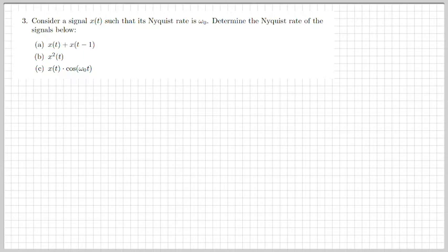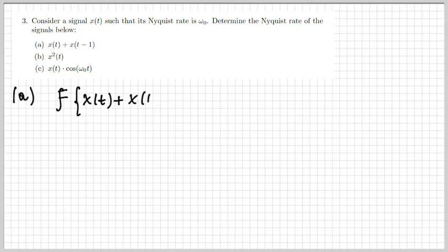For today, here's the first exercise. We're given a signal x(t) that has a Nyquist rate ω₀. The Nyquist rate is the minimum frequency at which we should take samples of a signal in order to reconstruct it without losing any information. Given the Nyquist rate of the original signal x(t), we want to determine the Nyquist rate of three other signals — cases a, b, and c.